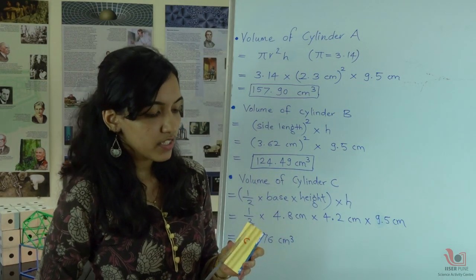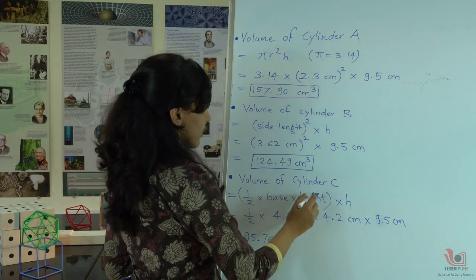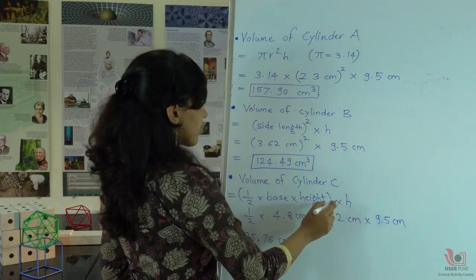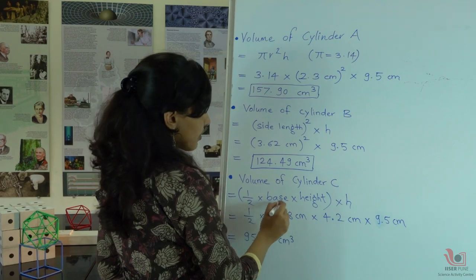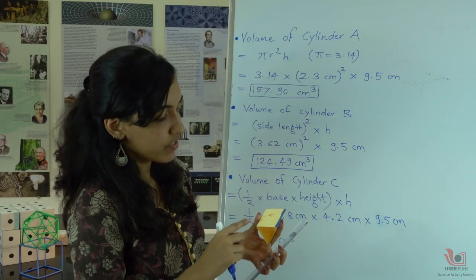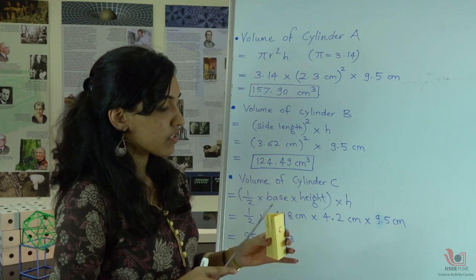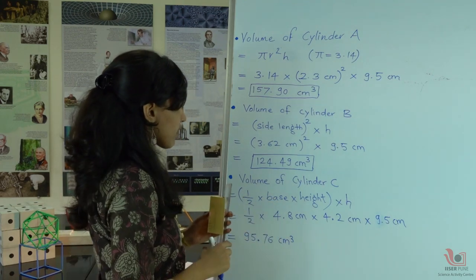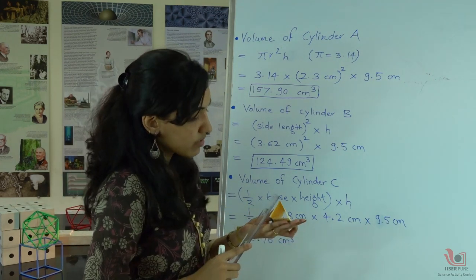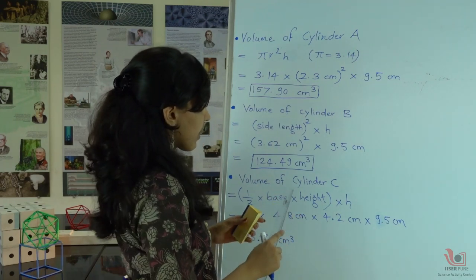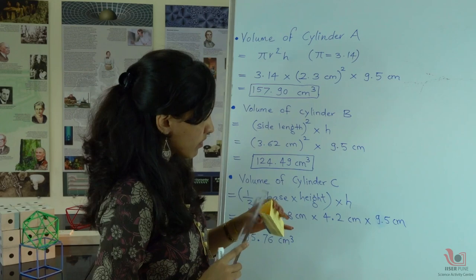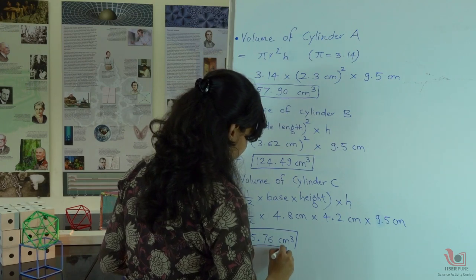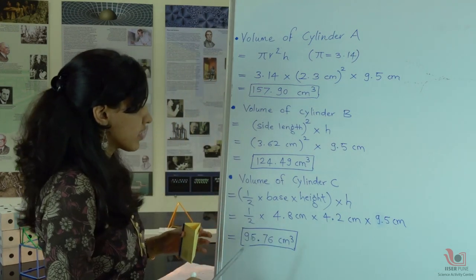Now for the triangle base prism, the volume formula is half base times height times the height of the cylinder, where half base times height is the area of the triangle. To find the volume of the prism we multiply by the height of 9.5 cm. The base is 4.8 cm and the triangle height is 4.2 cm. So the total volume of this prism is 95.76 cm³.